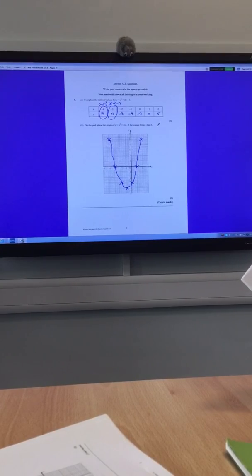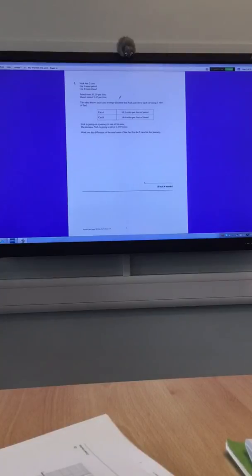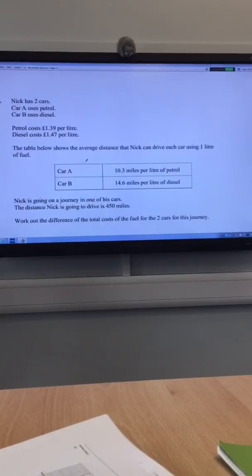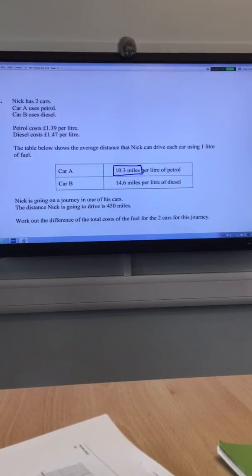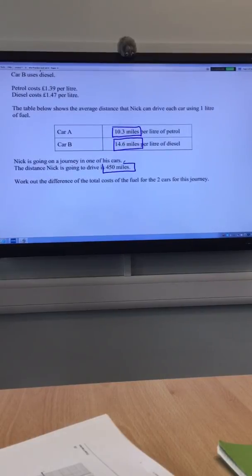That would be worth two marks, the total four, so that's already a reasonable return for one question. Next one, there's two cars. Car A uses petrol, Car B uses diesel. You've got different prices for each one. The table shows the distance he will travel. 10.3 miles if you use petrol, but you'll get 14.6 miles if you use diesel. That's actually true, by the way. If you use a diesel car, you'll generally go further per liter of petrol. Is it worse for the environment? It is worse for the environment, but you'll go further.